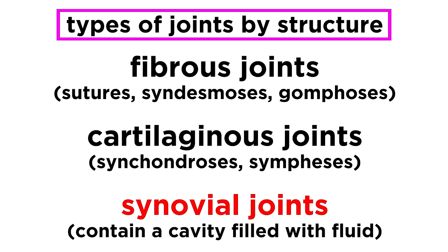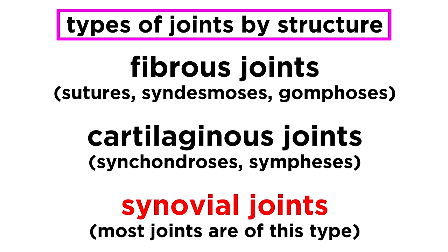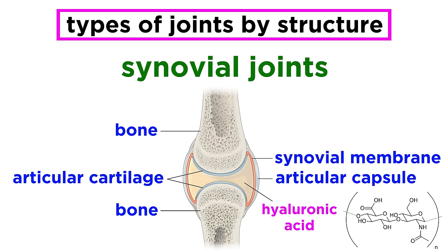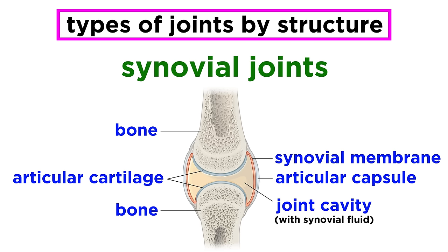Lastly, we have synovial joints. These have an actual cavity filled with fluid, which allows for substantial mobility. Most joints are of this type, especially the ones in our limbs. Articular cartilage covers each opposing bone surface, protecting the ends of the bones. The joint cavity contains synovial fluid, which is very viscous, containing hyaluronic acid secreted by cells in the nearby synovial membrane. This fluid acts as a lubricant and reduces friction between the layers of cartilage.